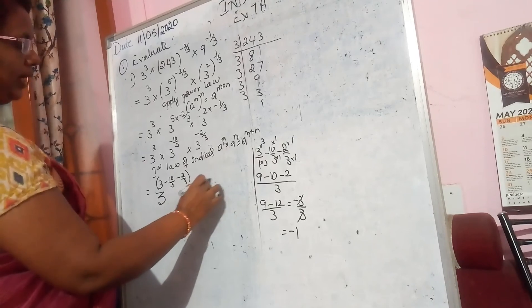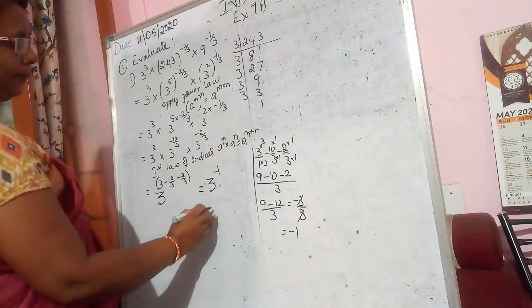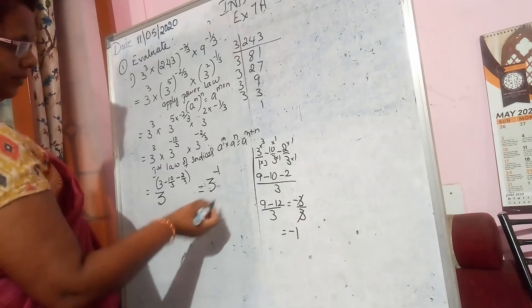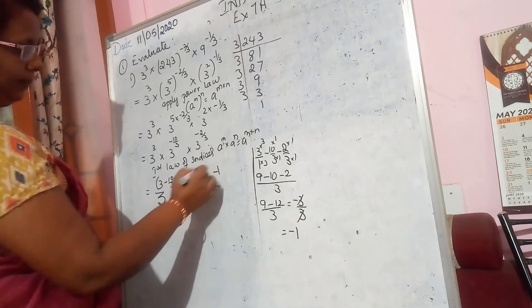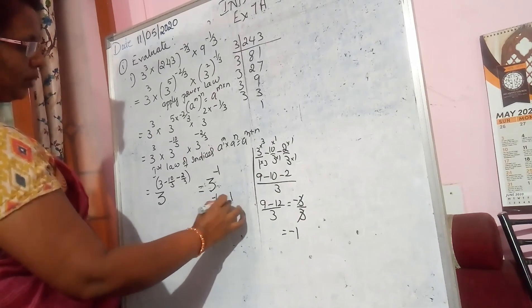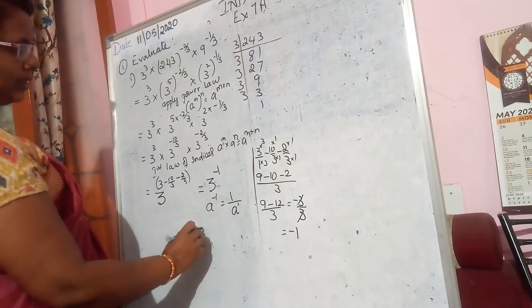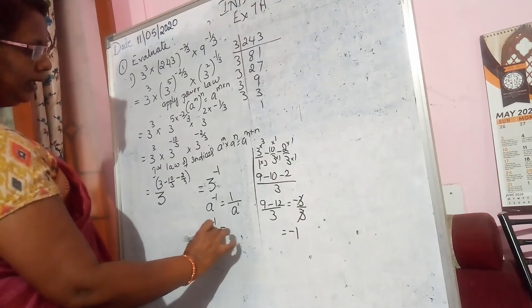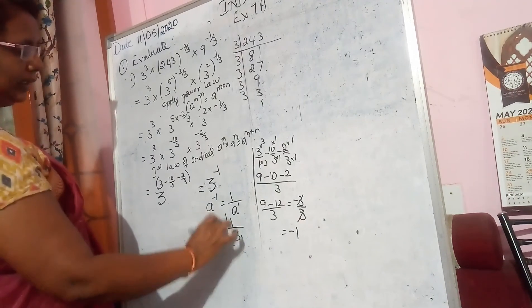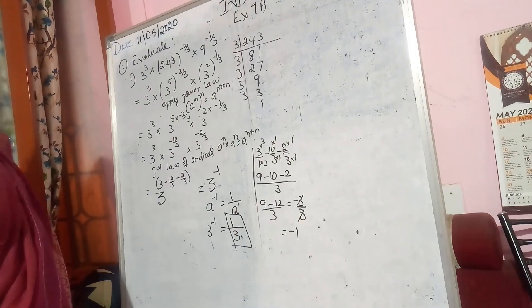Now applying the negative index rule: a raised to the power of minus 1 equals 1 by a raised to the power of 1. So 3 raised to the power of minus 1 can be written as 1 by 3. That is the final answer.